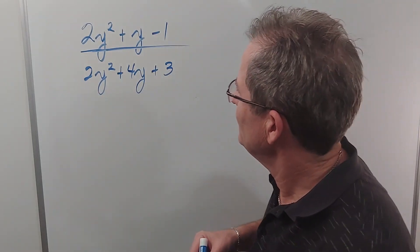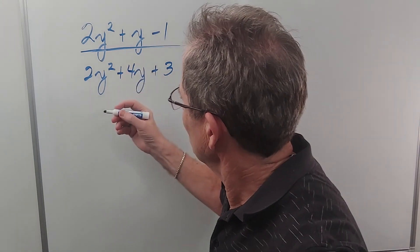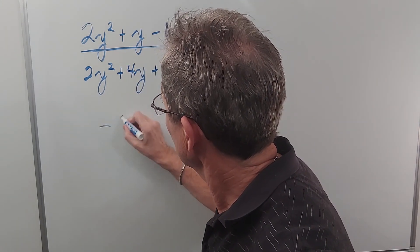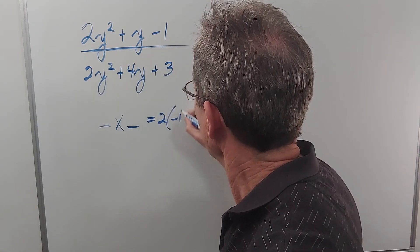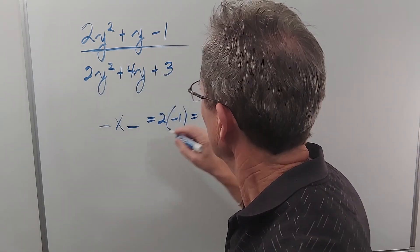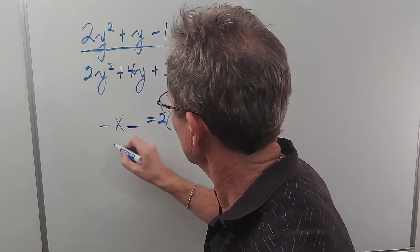Because it's not a 1, in order to factor the numerator we have to find two numbers that multiply to 2 times negative 1, which is negative 2, and they add up to that number which is 1.